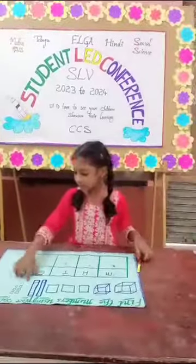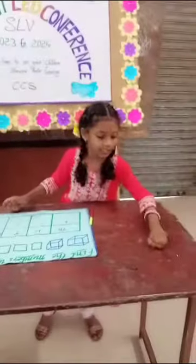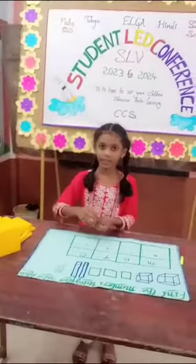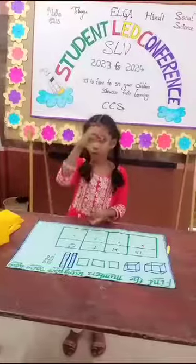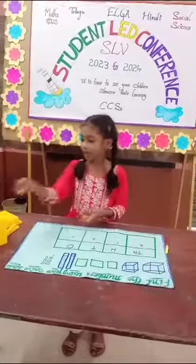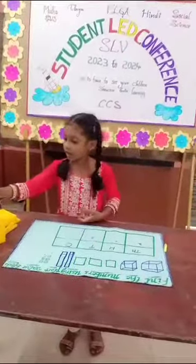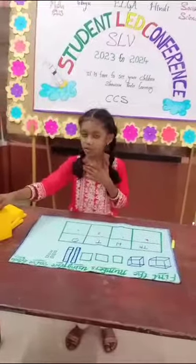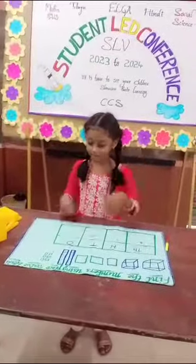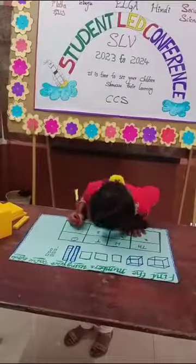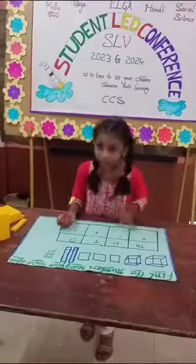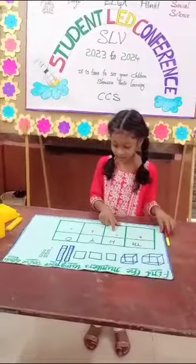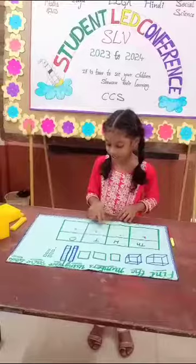There are 6 blocks. So I will take 6 blocks — 1, 2, 3, 4, 5, 6. They represent the ones place. So I will write 6 in the ones place. The total number is 2,326.